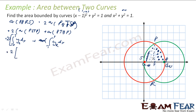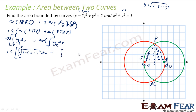For the green curve, the formula is (x-1)² + y² = 1, so y_green = √(1 - (x-1)²). For the red curve, x² + y² = 1, so y_red = √(1 - x²). So the area becomes 2 times the integral from 0 to T of √(1-(x-1)²) dx plus the integral from T to 1 of √(1-x²) dx.